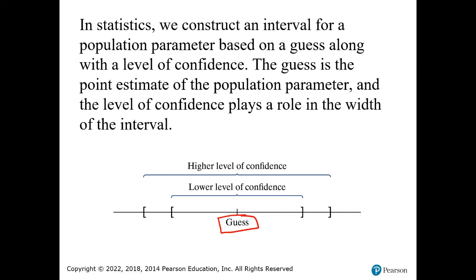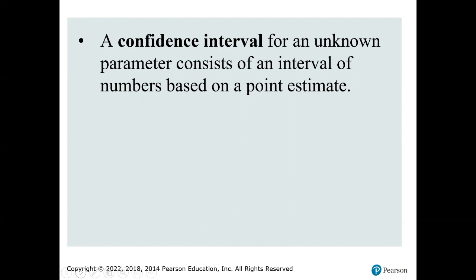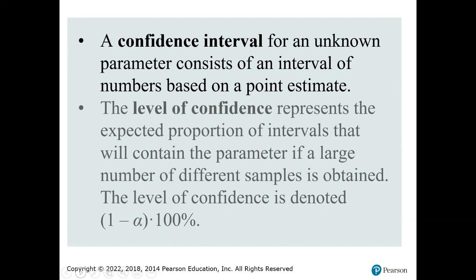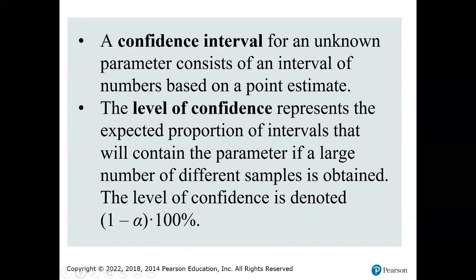We then select a level of confidence. A lower level of confidence is not as spread apart, versus a higher level of confidence, which means there's going to be a little more spread around our guess to be more confident. A confidence interval is a range of numbers — think of 20 to 30 as a range — that estimates where we expect this value to fall. A confidence interval for an unknown parameter consists of an interval of numbers based on a point estimate. The level of confidence represents the expected proportion of intervals that will contain the parameter if a large number of different samples is obtained.